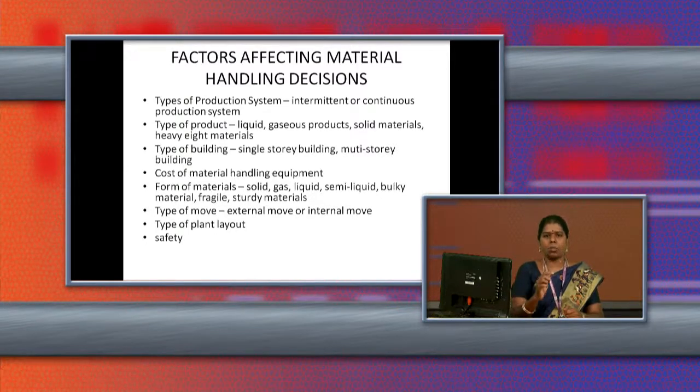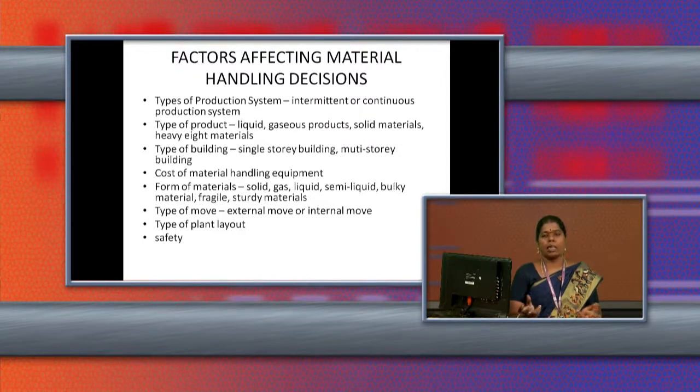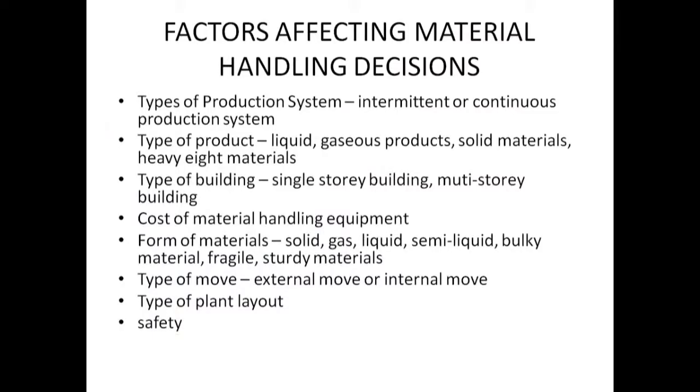Based on the type of production system — continuous or intermittent — we have to choose the material handling equipment. For a continuous production system we can use conveyors, turn tables, and automatic moving machines. For an intermittent production system we have to use trucks, cranes, and other variable path material handling equipment.